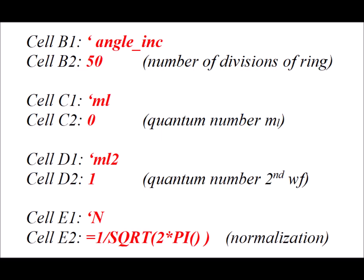Now we begin a new worksheet. In cell B1, we type apostrophe angle_inc and this is going to be the number of divisions, subdivisions of our ring. So in cell B2, we put the actual value, and I've used 50.